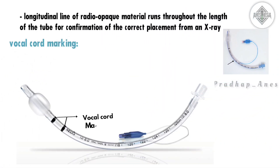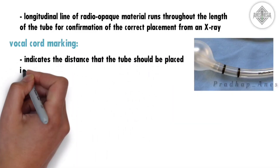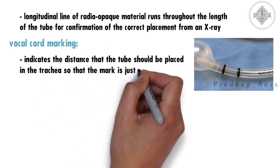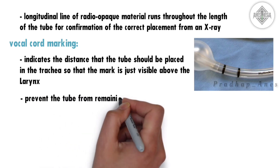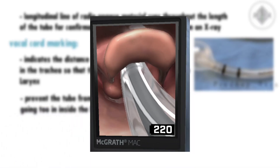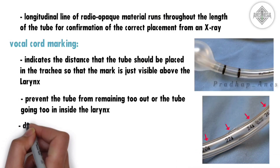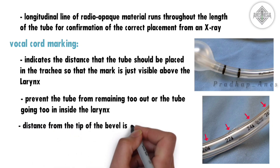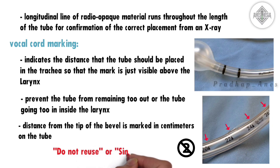Then we can see some bold transverse black lines made a few centimeters above the cuff. This is called vocal cord marking. It indicates the distance the tube should be placed in the trachea so that the mark is just visible above the larynx, preventing the tube from being too shallow or too deep. The distance from the tip of the bevel is also marked in centimeters on the tube, so we can roughly place the tube in its correct position. There will also be cautionary notes such as 'do not reuse' or 'single use only' if the tube is disposable.